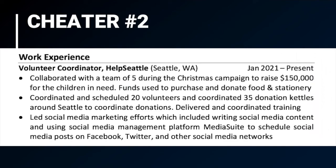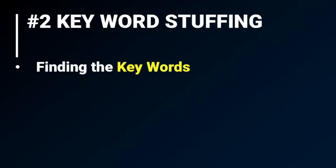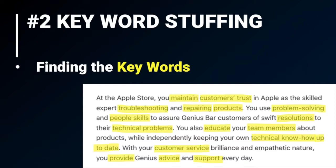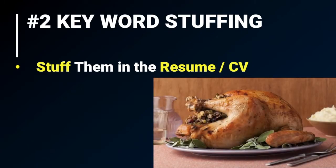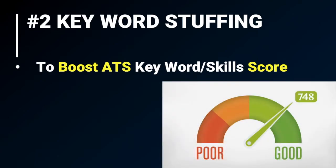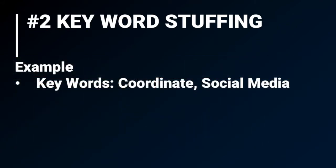Let's take a look at cheater number two — see if you can spot how this individual tried to boost their score and cheat the system. This is called keyword stuffing — stuffing like a turkey. The idea is similar: you find and identify the keywords from the job description to see what kind of person the company is looking for, and you stuff them into your resume. This boosts your ATS keyword and skill score. The more times you include a word, the more experience it appears you have, giving you a higher score.